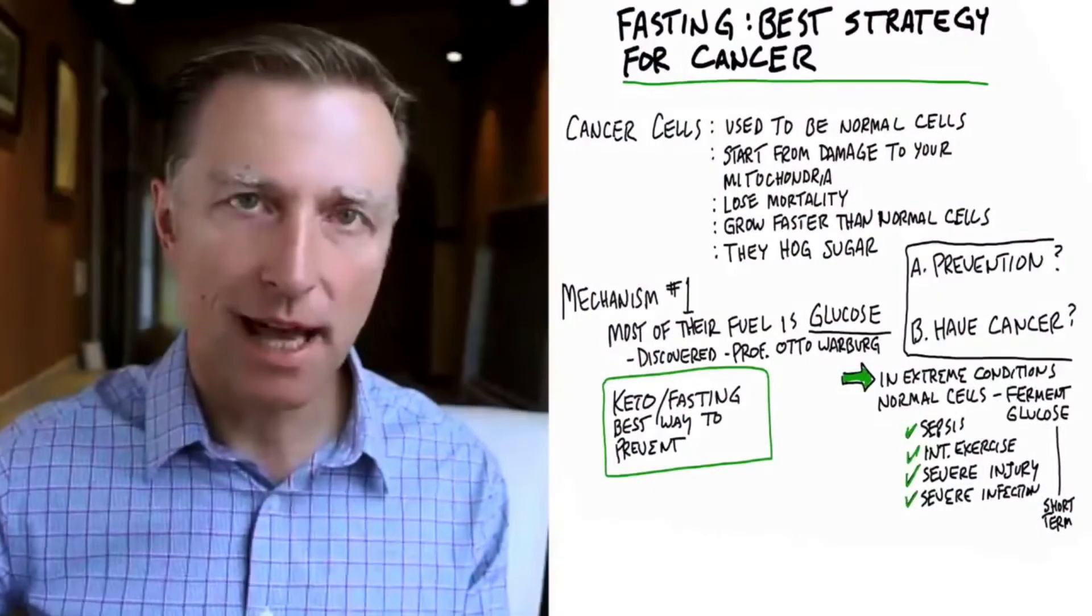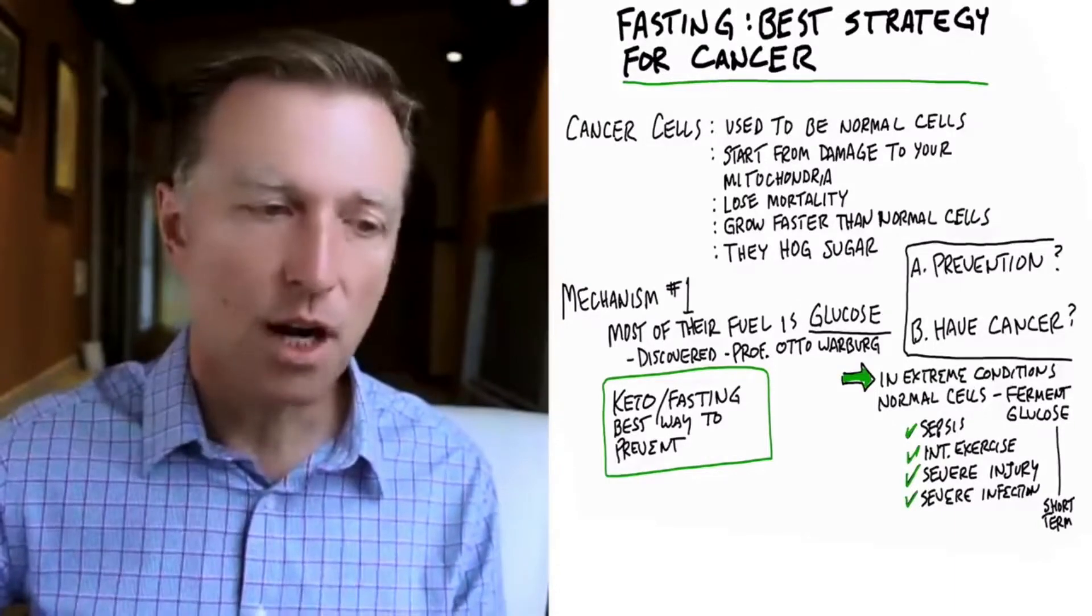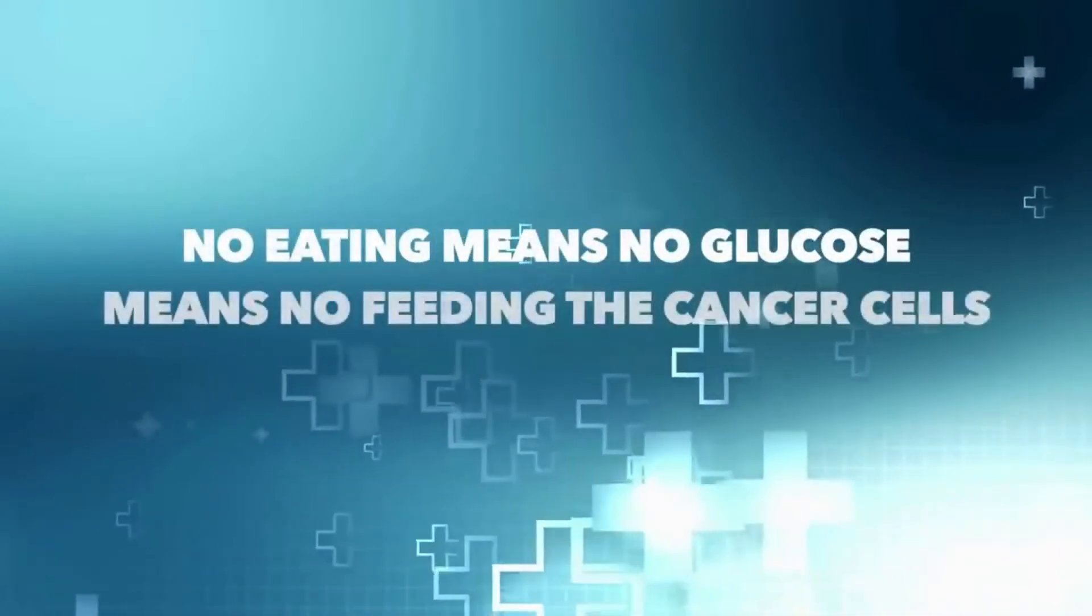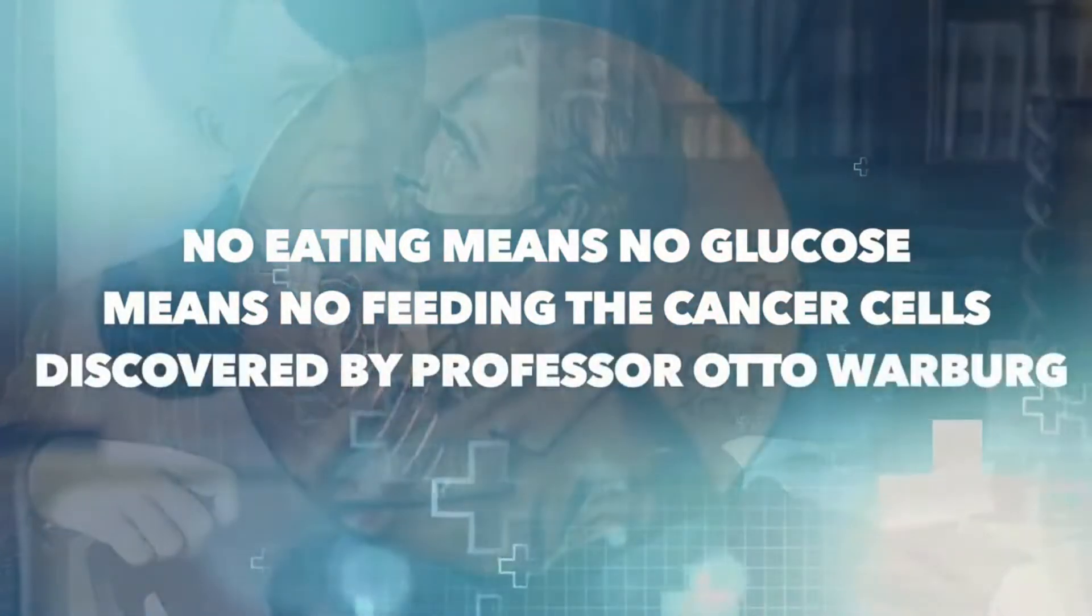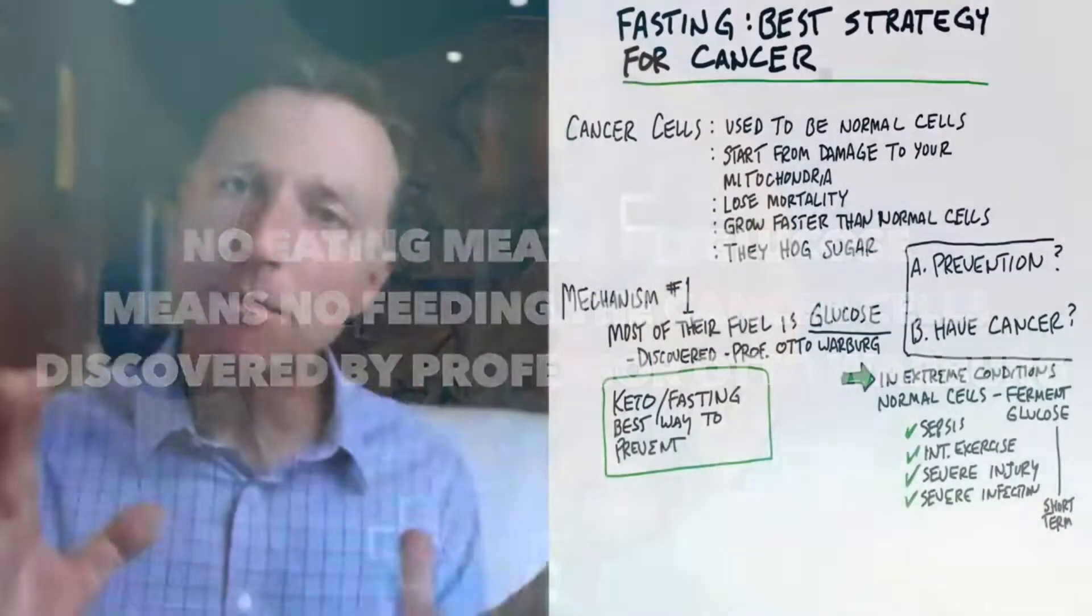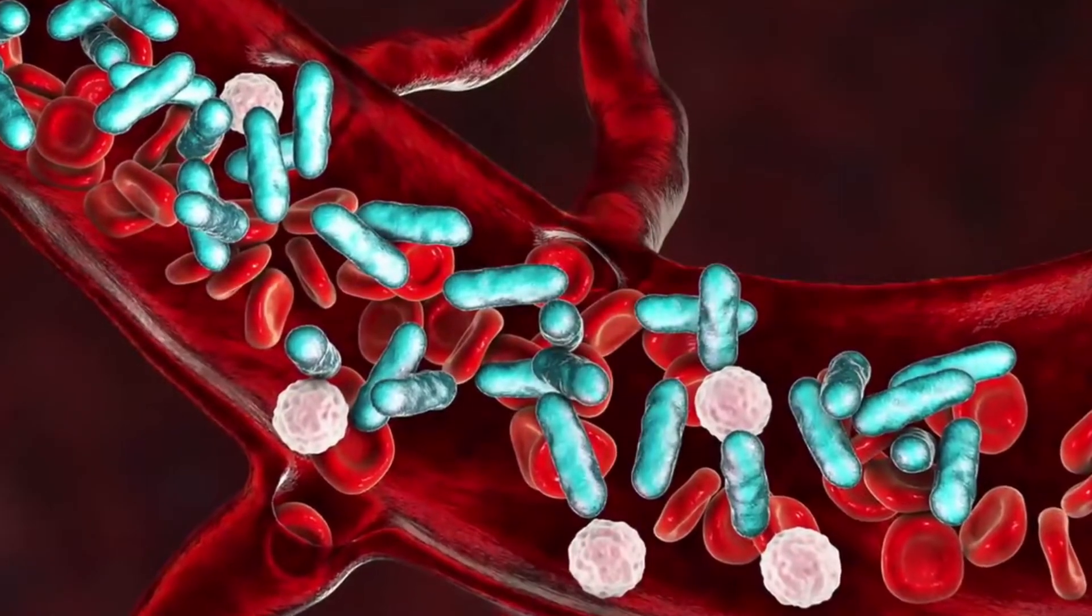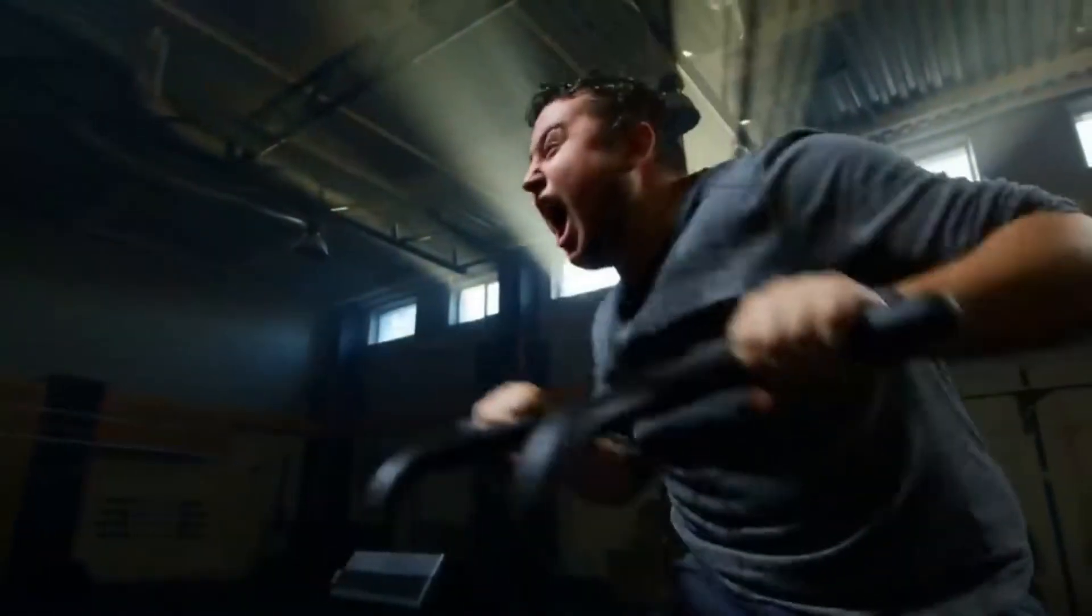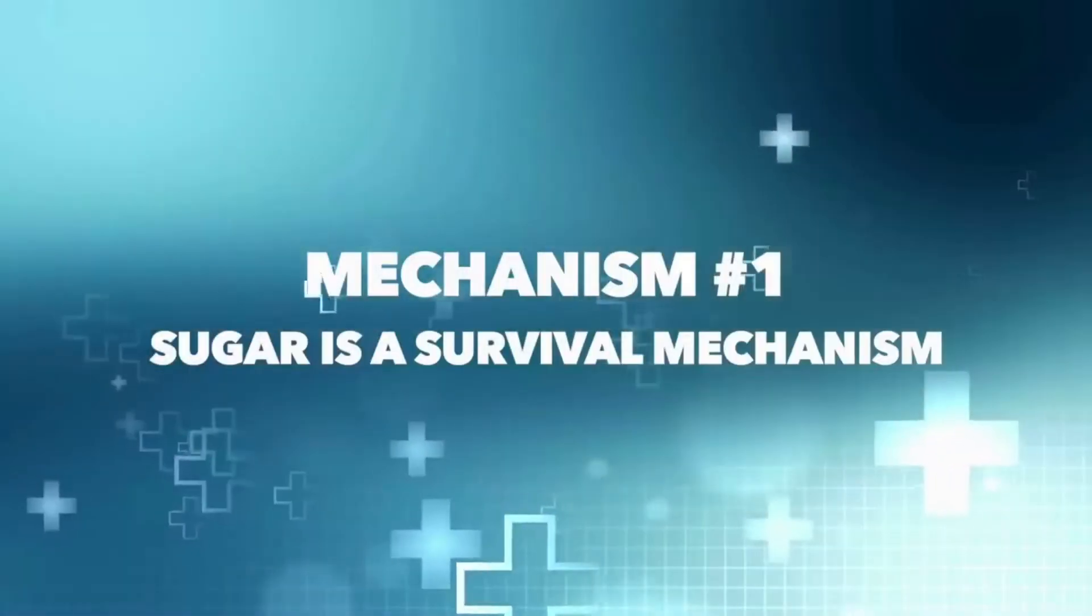So the first mechanism of fasting in relationship to a cancer cell is that fasting helps to starve off the fuel. It starves off your glucose because guess what? You're not eating anything. So no eating, no glucose. And so you help to prevent feeding the cancer cell. Now, this was discovered by Professor Otto Warburg, who won the Nobel Prize in medicine. Now, in extreme conditions, normal cells can temporarily ferment sugar, as in a severe infection like sepsis or a severe pathogen invasion in your body or intense exercise or trauma. Your body can switch to ferment sugar. So this mechanism is a survival mechanism for fuel.